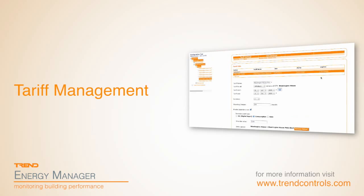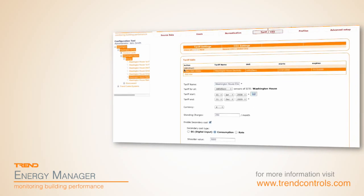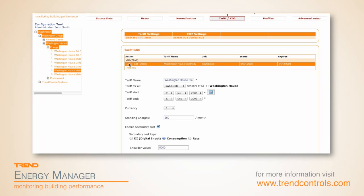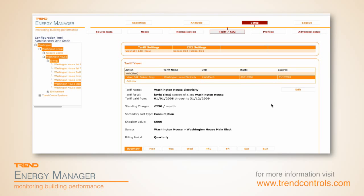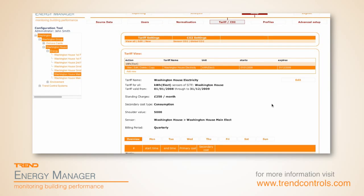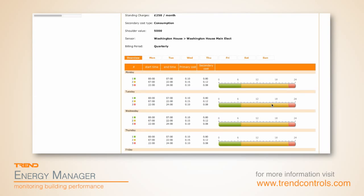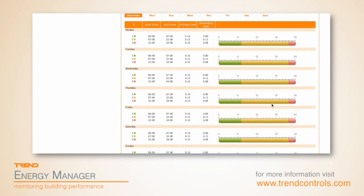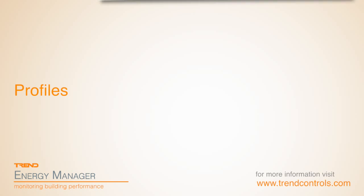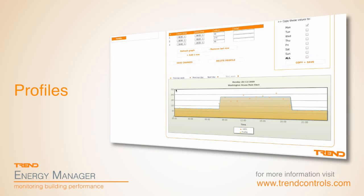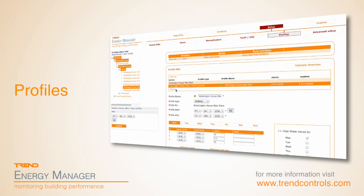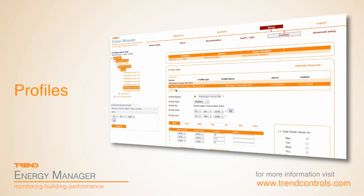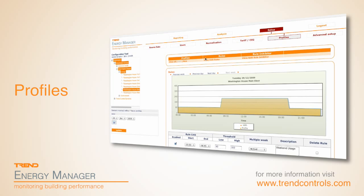Trend Energy Manager comes with a Tariff Manager that's easy to use and allows you to add company tariffs quickly and simply. For the purposes of legislation, CO2 usage can be set against an energy type of your choice. Profiles can be set for individual points, enabling exceptions to be generated if the profile target is exceeded during that day. Correct rule configuration is important, as it contributes to easy diagnostics of where the energy is being used and wasted.